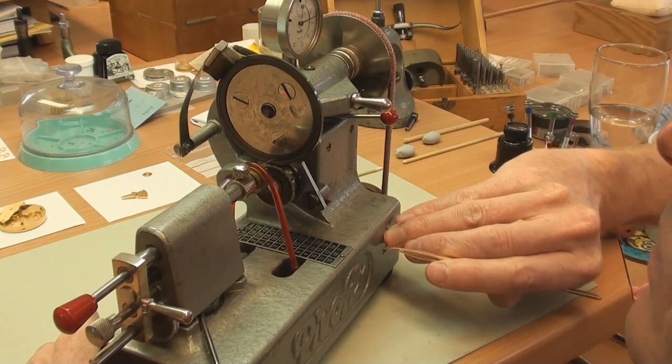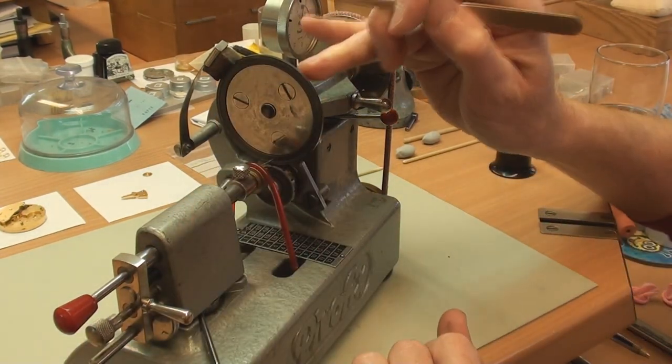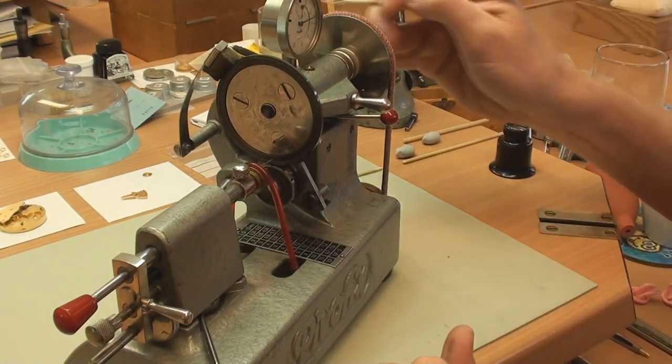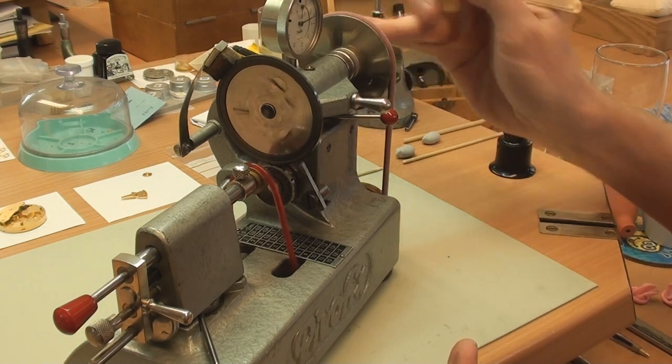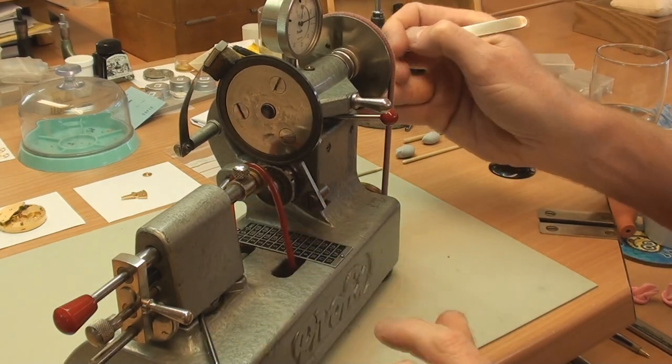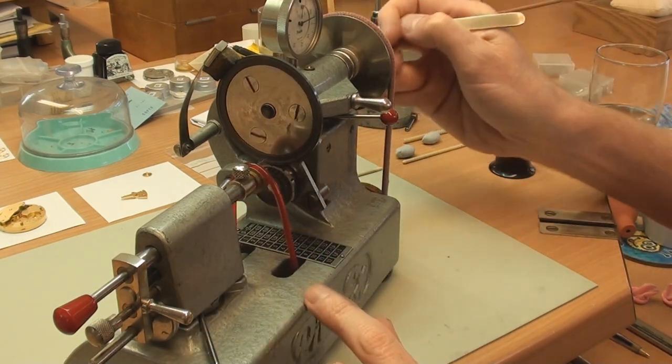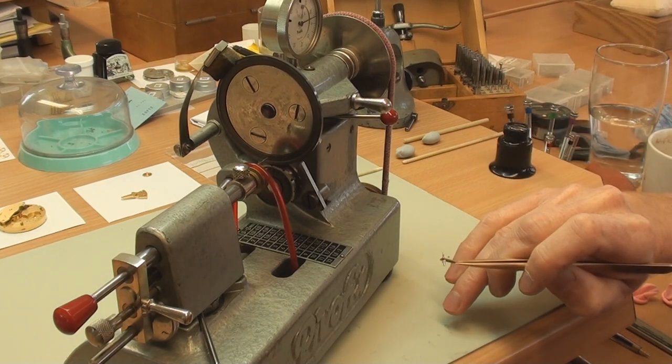So we have this simple grinding wheel here, a pulley which turns it, and then we have an end here to support the opposite end of the pinion that's not being ground.